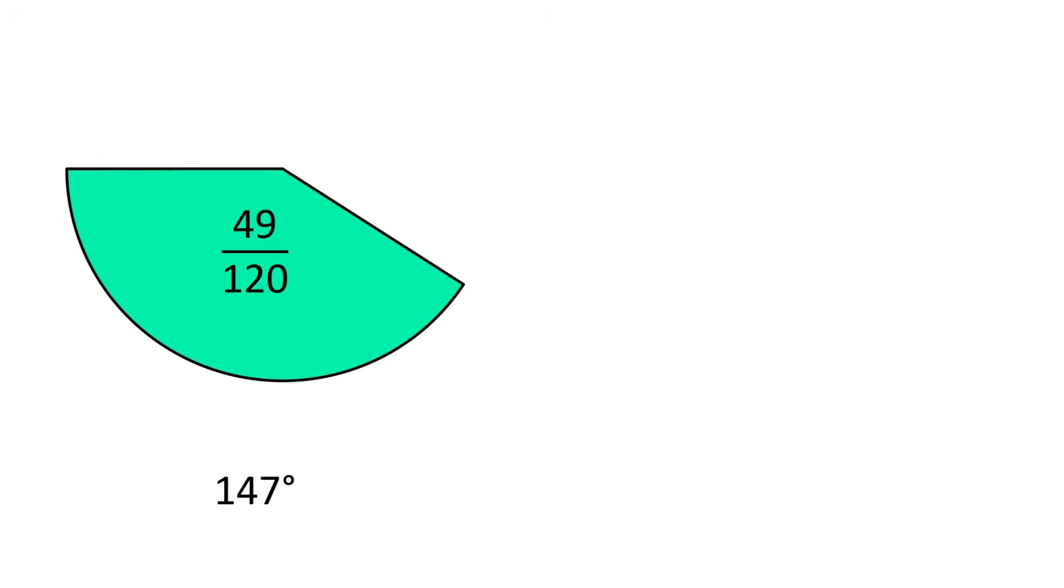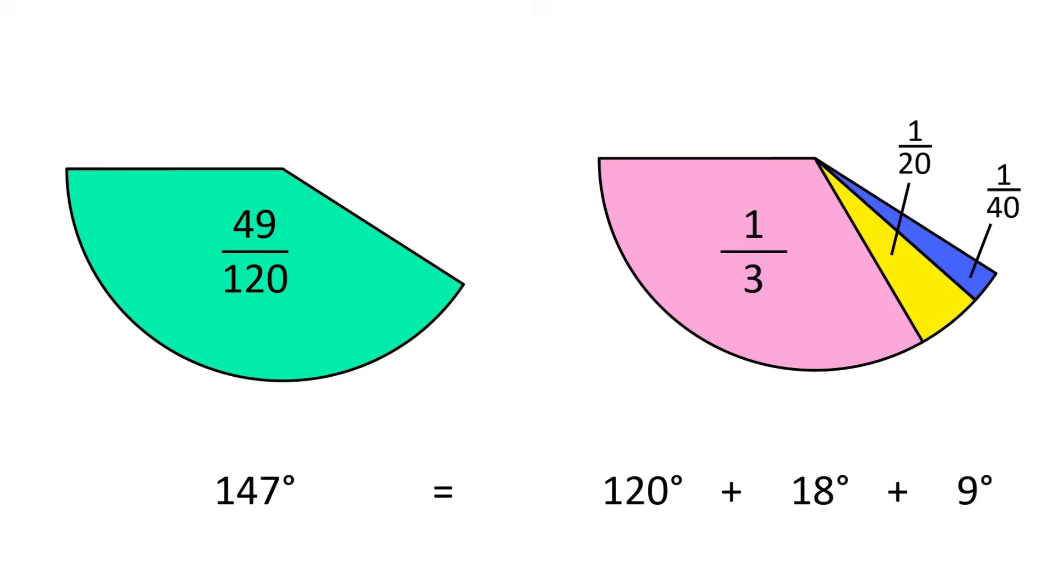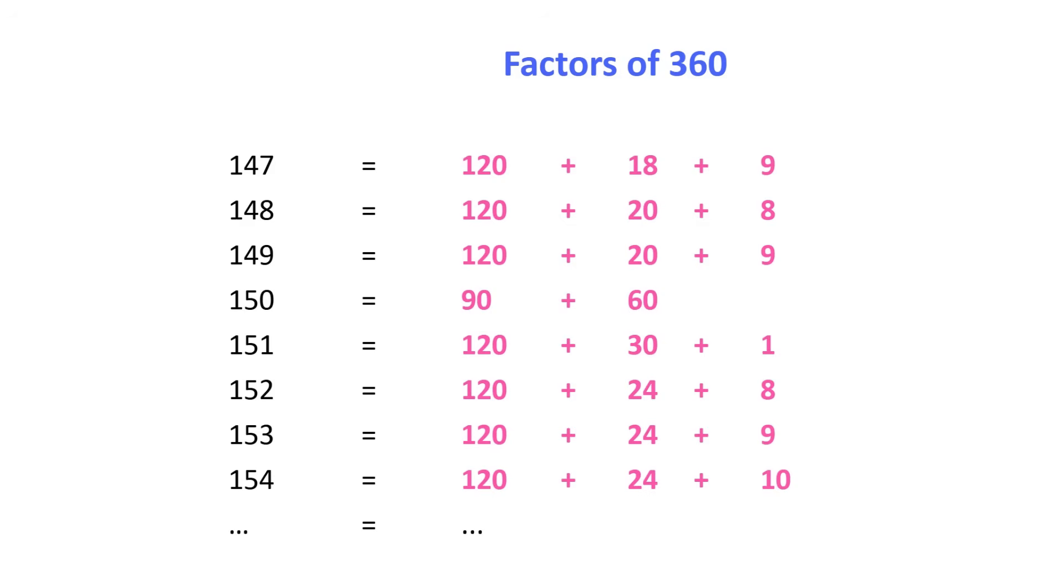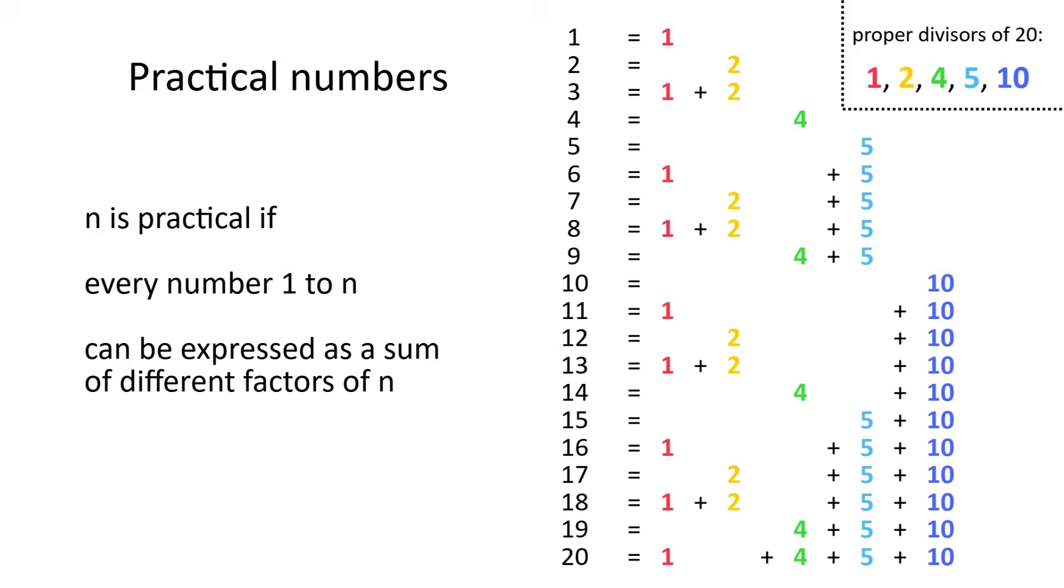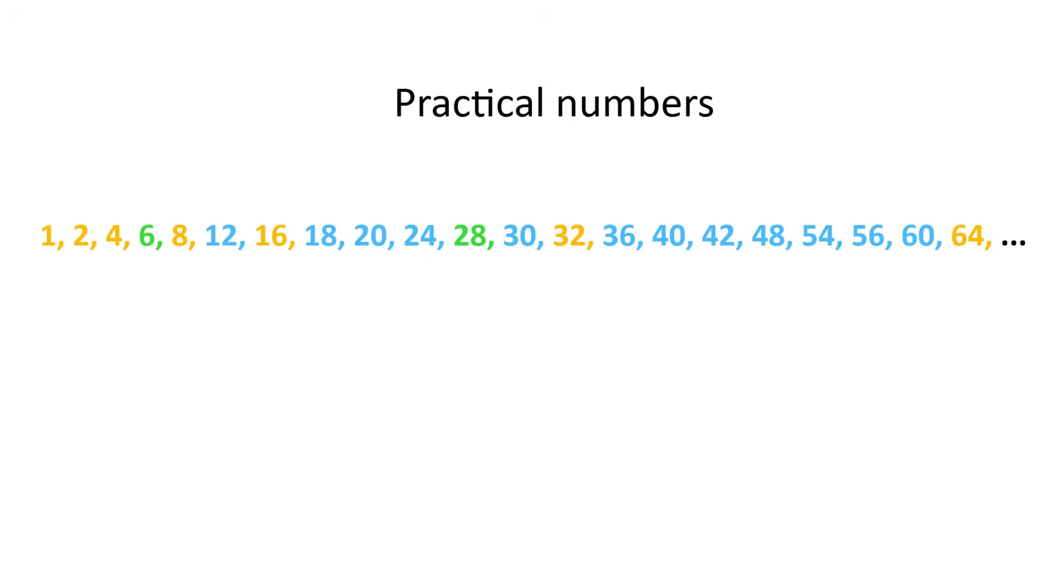Not every integer number of degrees is easy to work with, for example 147, but what we can do is understand that number in terms of ones that are easy to work with. 147 is just 120 plus 18 plus 9, which means 147 degrees is one-third of a circle plus one-twentieth plus one-fortieth. In fact, you can pick any number from 1 to 360, and it's always possible to express it as the sum of different proper divisors of 360. This feature has a special name. A practical number is one where any number from 1 to n can be expressed as the sum of a subset of the proper divisors of n. Actually, the definition only requires 1 to n minus 1, but other than powers of 2, practical numbers satisfy this condition anyway.